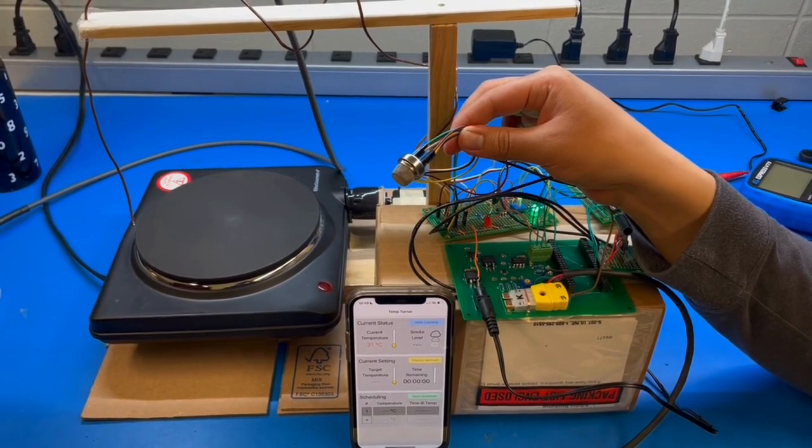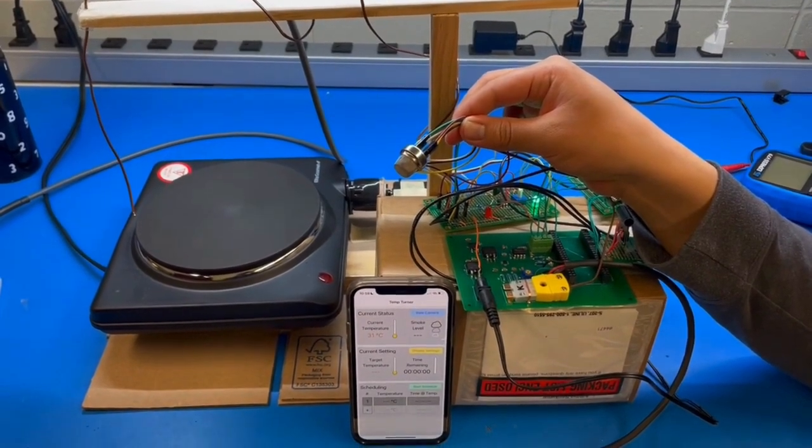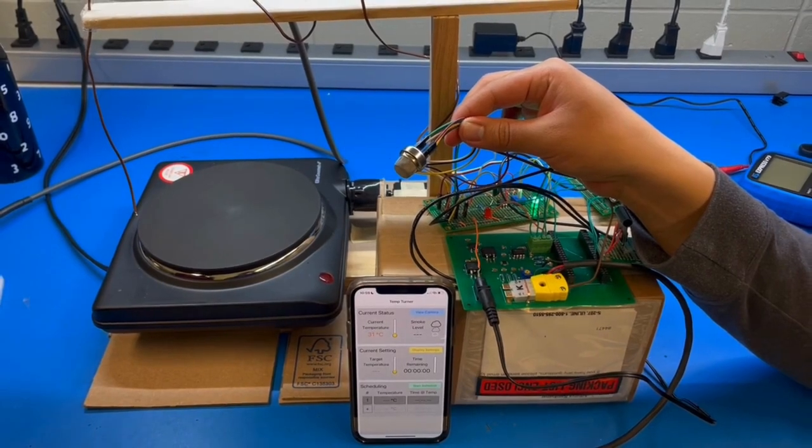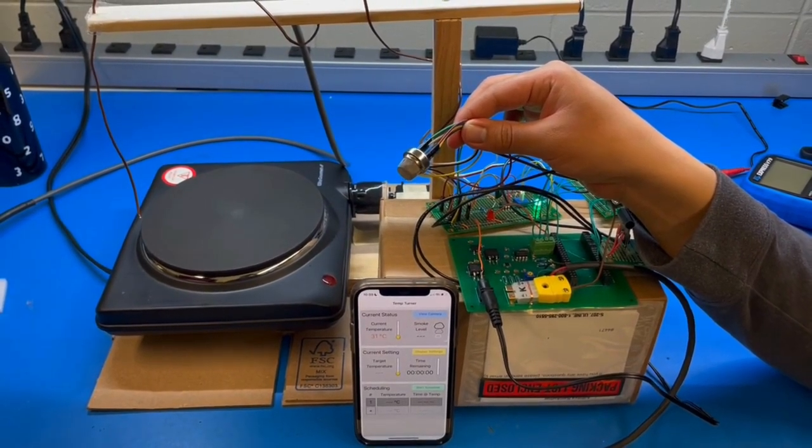Our system is able to classify the smoke level as being low, medium, and high based on the amount of gas concentration. To illustrate this, I am now producing butane gas from a lighter.